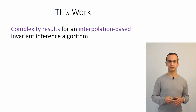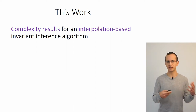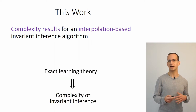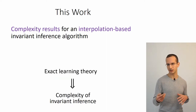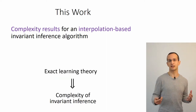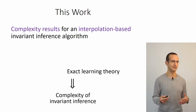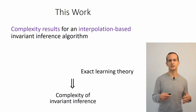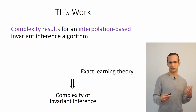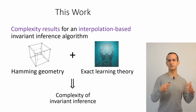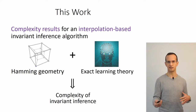In this work we analyze an interpolation-based invariant inference algorithm and prove complexity results: classes of transition systems and invariants for which the algorithm successfully infers an invariant in a polynomial number of SAT calls. Our main insight is that the complexity of this algorithm can be understood as a manifestation of exact learning theory, the theory of learning exact classifiers using queries, combined with elements of the geometry of the Hamming cube.